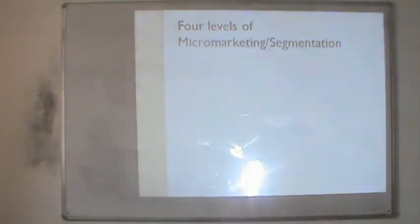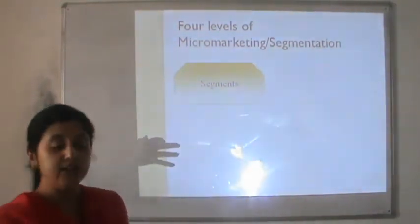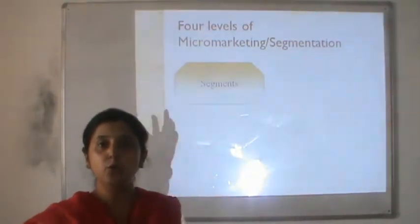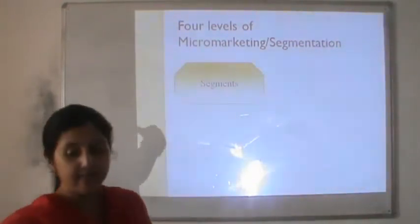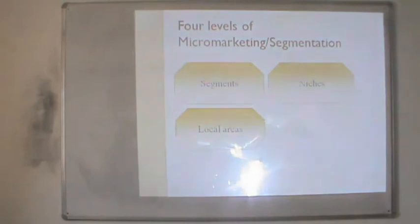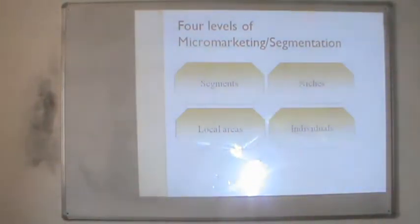There are various levels at which segmentation can take place, also referred to as micromarketing. The first level is segment — a large identifiable group of customers with similar needs satisfied by one type of product. Then there is a niche market — a relatively smaller group with very distinctive requirements, ready to pay a premium price. The third category is local areas — people served in specific geographical locations. Finally, there are individuals, where companies offer customized services.